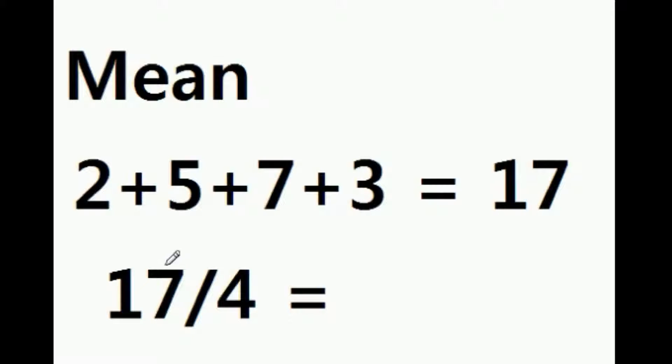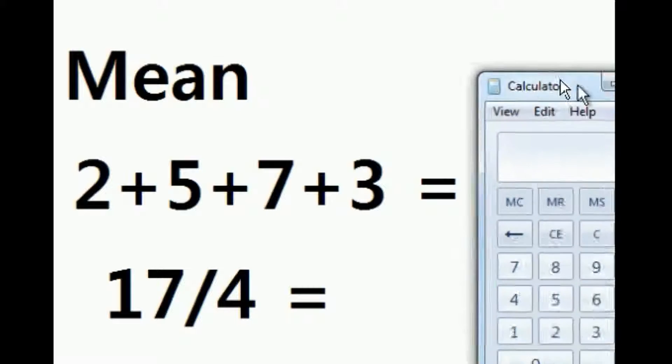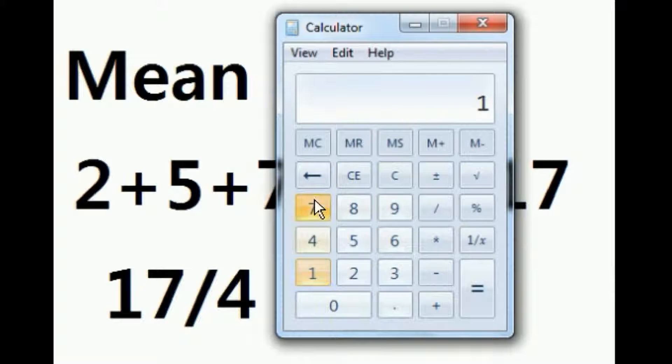1, 2, 3, 4. I'm going to divide 17 by 4. What will I get? Let's make sure we're accurate. 17 divided by 4 equals 4.25.